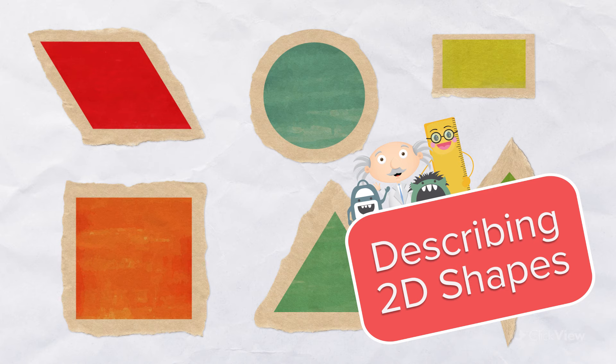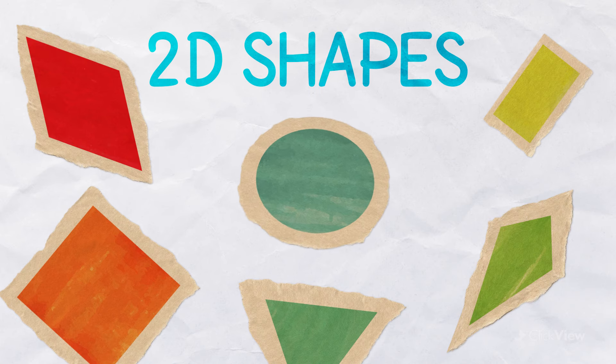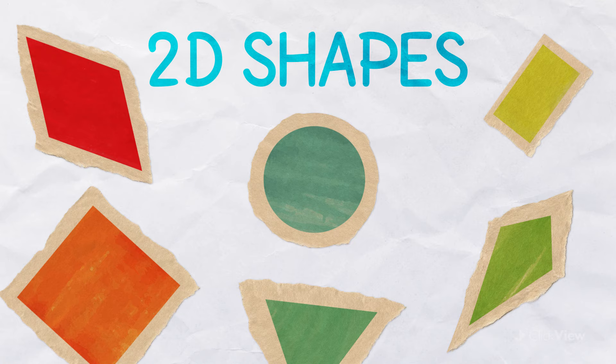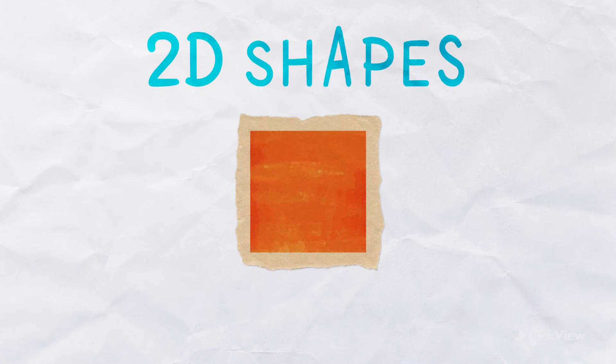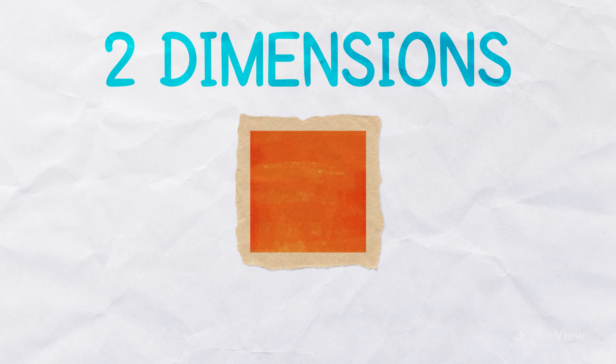Two-dimensional, or 2D shapes, are flat. They are called two-dimensional because they only have two dimensions, length and width.